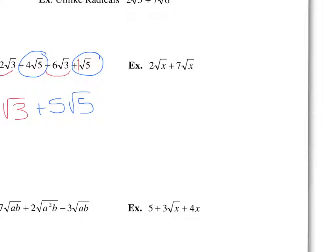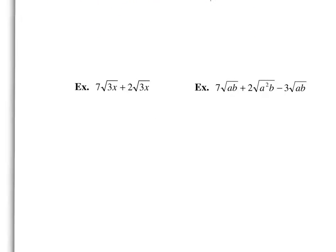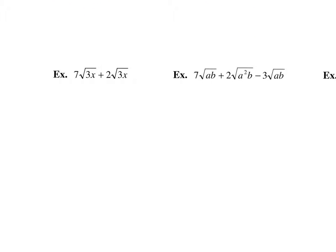2 square root of x plus 7 square root of x — these are like radicals; they both have square root of x. We just add the coefficients: 2 plus 7 makes 9 square root of x. Similarly, 7 square root of 3x plus 2 square root of 3x — they both have square root of 3x, so we add 7 and 2 to get 9 square root of 3x.